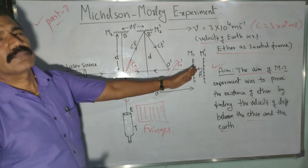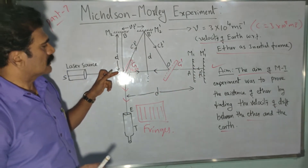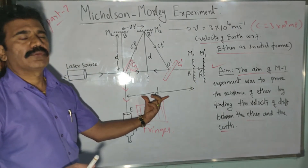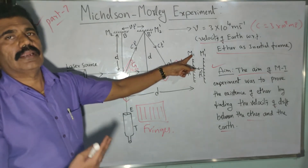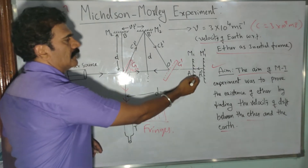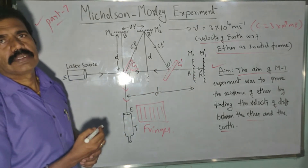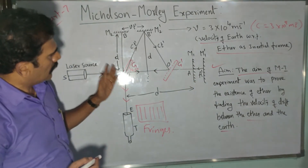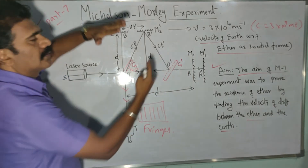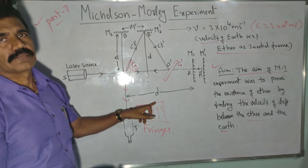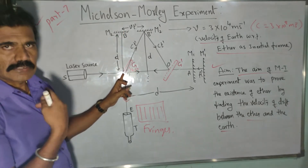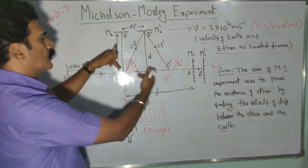On both sides of the beam splitter, we have two mirrors. One part of the light is transmitted through the glass plate and passes in the same direction to mirror M1, located at distance d. Mirror M1 is fully silvered, so it completely reflects the light back in the same path but in the opposite direction. The reflected light from glass plate G moves upward toward mirror M2. Mirrors M1 and M2 are exactly perpendicular to each other and at equal distance d. The reflected light from M2 also returns in the same path but in the opposite direction.